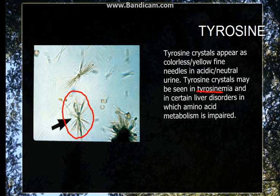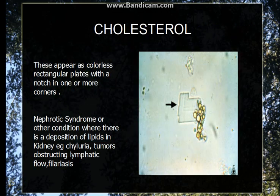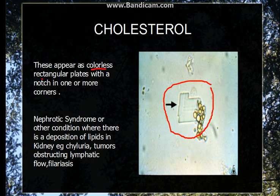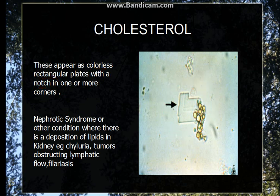Now going to cholesterol crystals. You can see this is a cholesterol crystal — they are colorless and rectangular, but they have a notch in one or more corners. They are seen in nephrotic syndrome or in disorders involving lipiduria or chyluria, such as filariasis or any lymphatic obstruction.